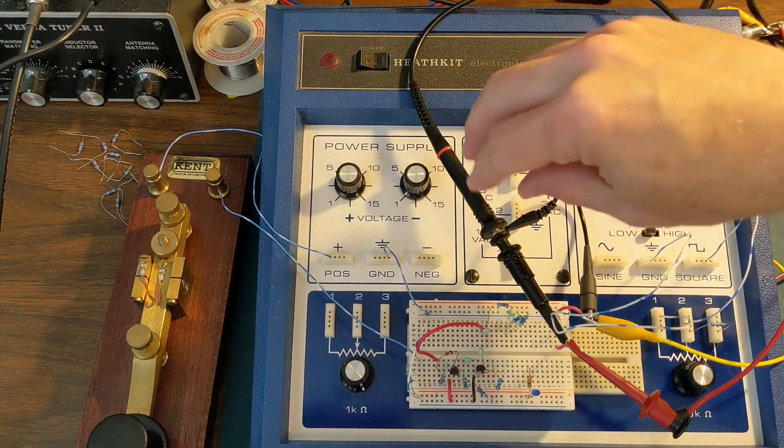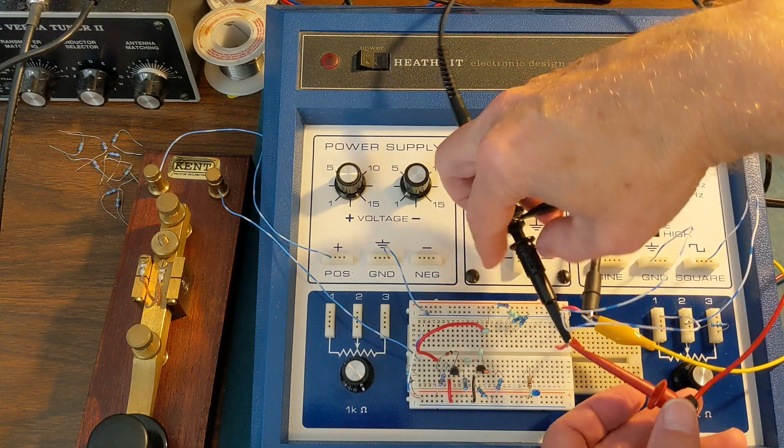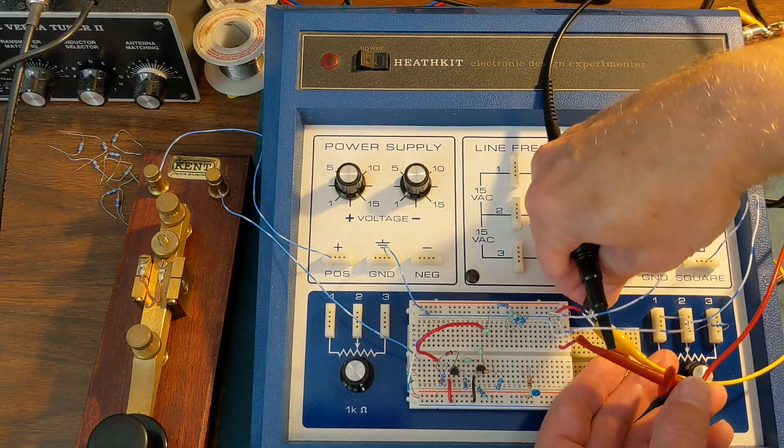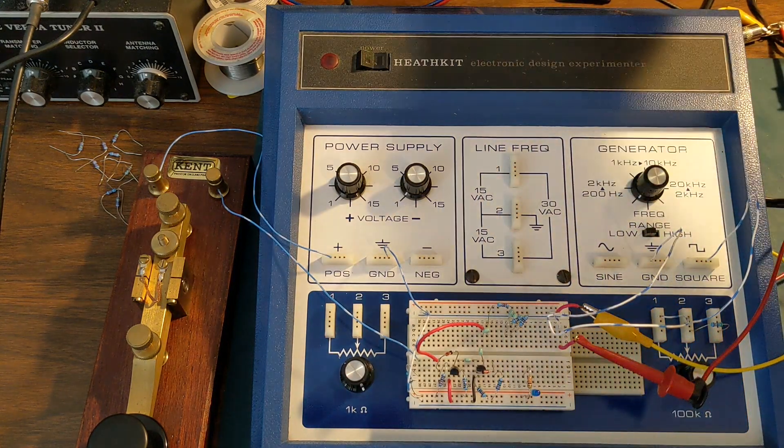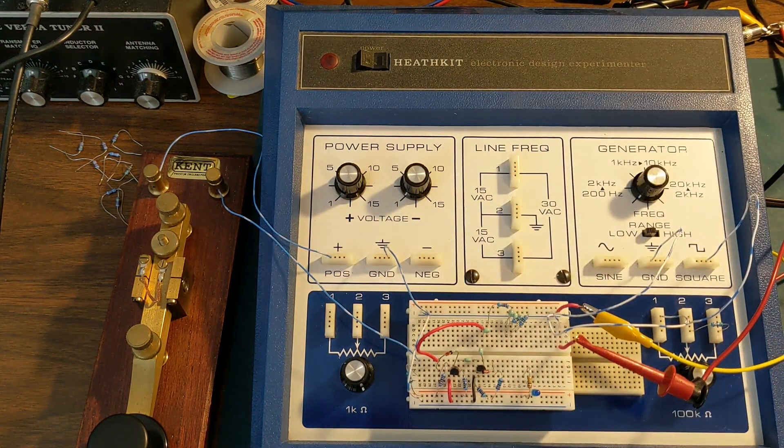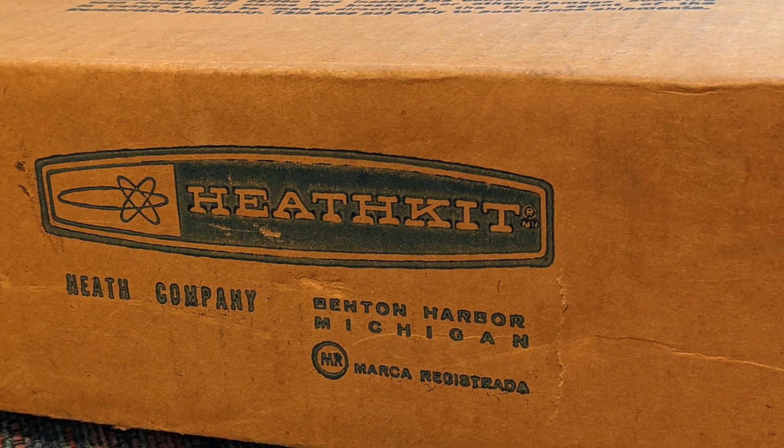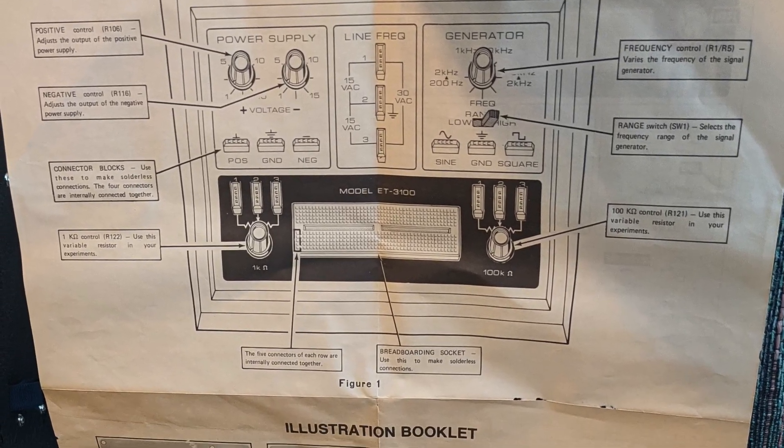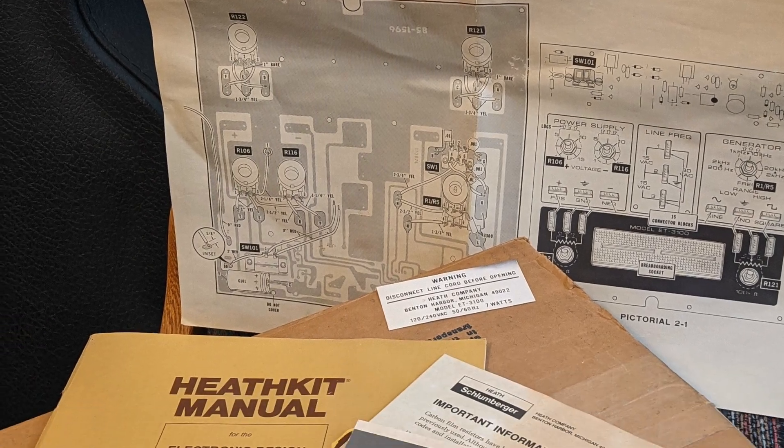I want to show you this fun little toy I got from eBay recently. It's a Heathkit electronic design experimenter from 1978. When it arrived, it was in its original Heathkit box, not terribly beat up, along with the construction manual and all of the paperwork, including the warranty card.